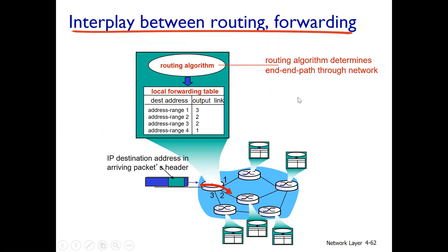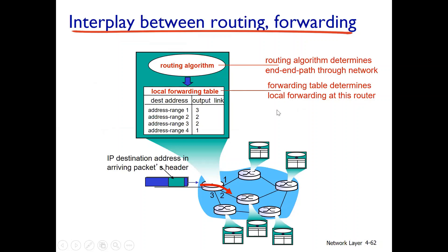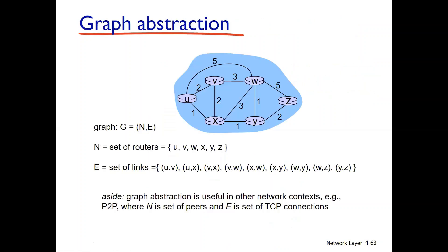The Routing Algorithm is used for end-to-end path determination. It is also used as a local forwarding algorithm — that means it determines which outgoing link to use. It is used in the network.